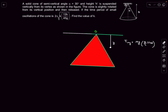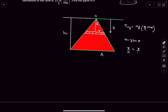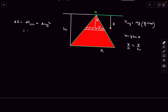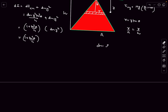To find the moment of inertia, we integrate by taking a disc element at distance y from the apex with radius r = y·tanθ. Using the parallel axis theorem: dI = dI_cm + dm·y². Here dI_cm is the diametrical moment of inertia of the disc, which is dm·r²/4. So dI = dm·y²·tan²θ/4 + dm·y² = dm·y²·(1 + tan²θ/4). The mass element is dm = ρ·π·r²·dy.